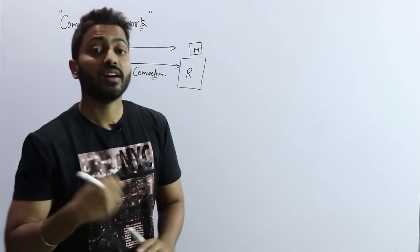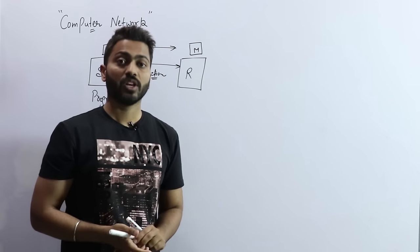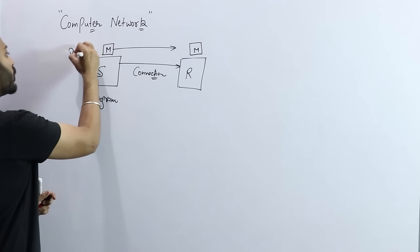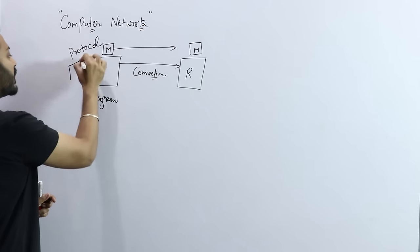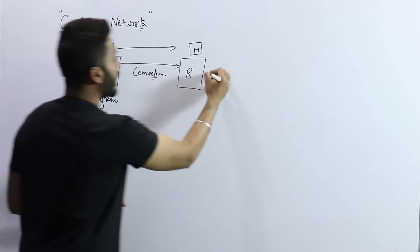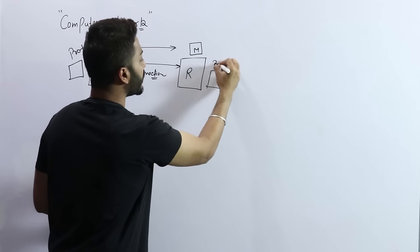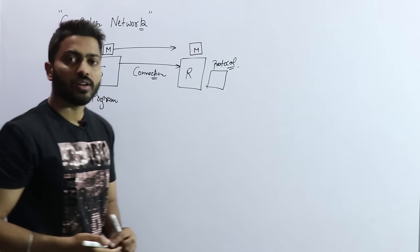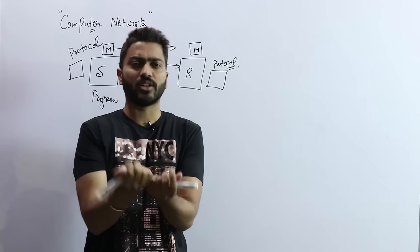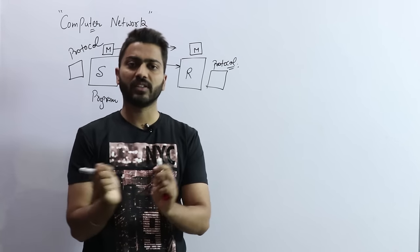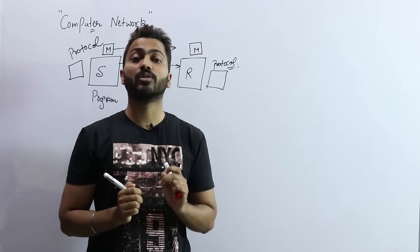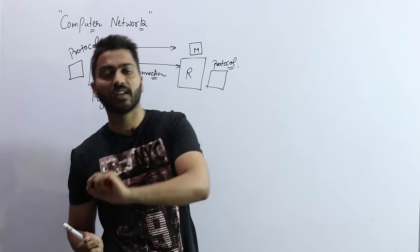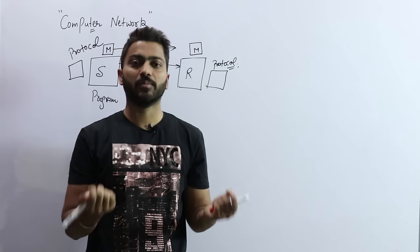The concept is: the data which is sent by the sender must also be understood by the receiver. For that, there must be some kind of protocol running at the sender machine and at the receiver machine. A protocol is a set of instructions — the sender will send data following these instructions so that the receiver is able to understand it.